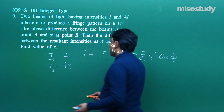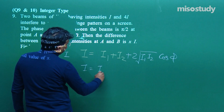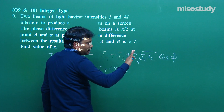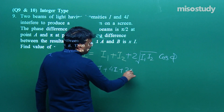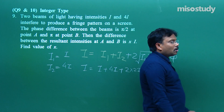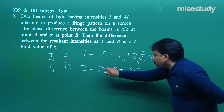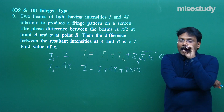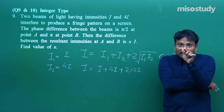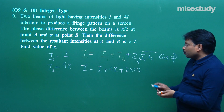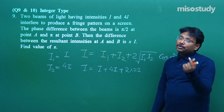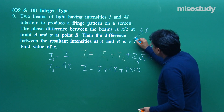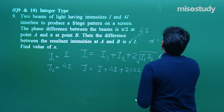Let me solve one case — you try the other. At one point: I = I + 4I + 2√(I × 4I) cos φ = 5I + 2 × 2I × cos φ. For cos 180° = −1: I = 5I − 4I = I. For cos 90° = 0: I = 5I + 0 = 5I. Using I_max formula (√I₁ + √I₂)² = (√I + 2√I)² = 9I, and I_min = (√I₁ − √I₂)² = (2√I − √I)² = I. So difference = 9I − 5I = 4I. Comparing with x × I, x = 4.